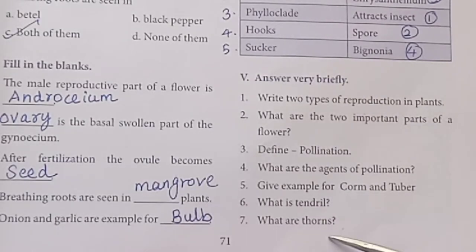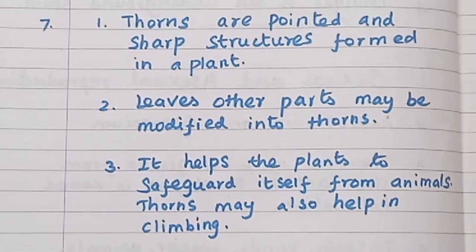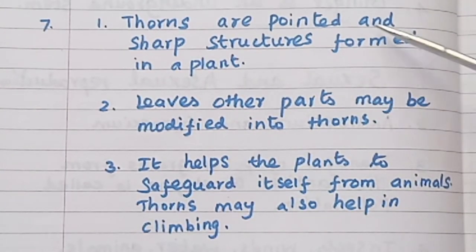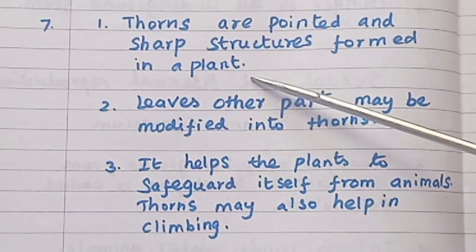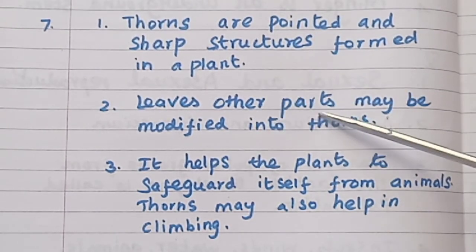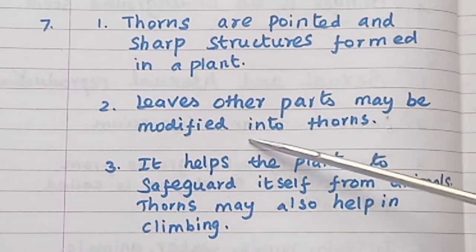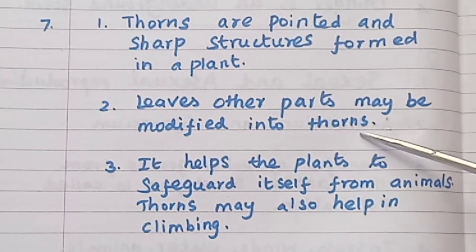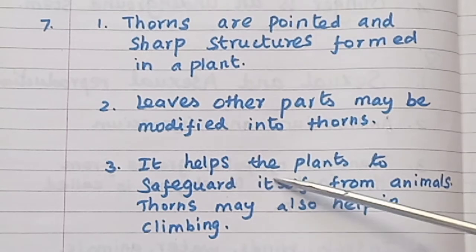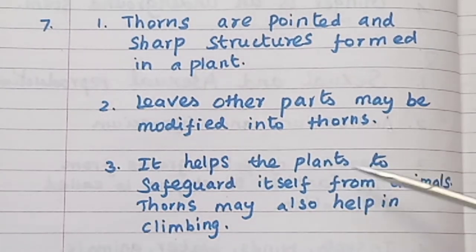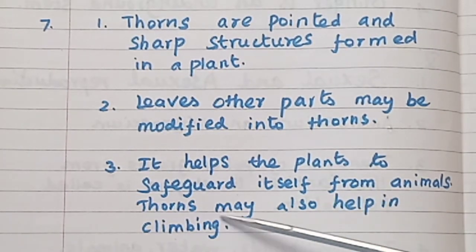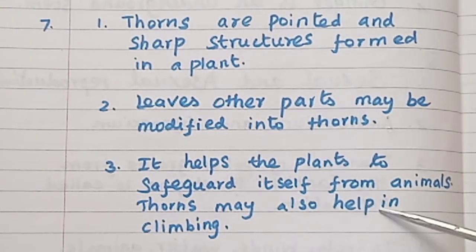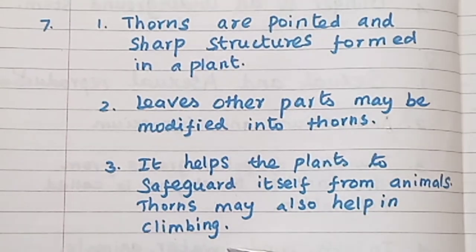What are thorns? Thorns are pointed and sharp structures formed when leaves or other parts of a plant are modified. They help the plant safeguard itself from animals. Thorns may also help in climbing.